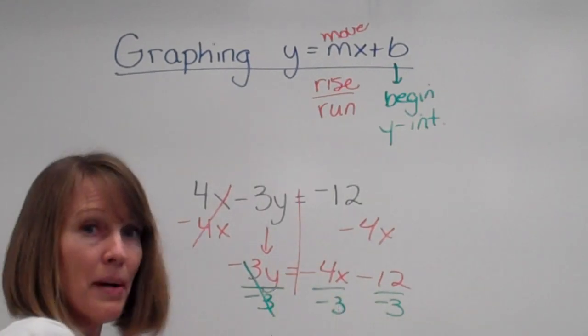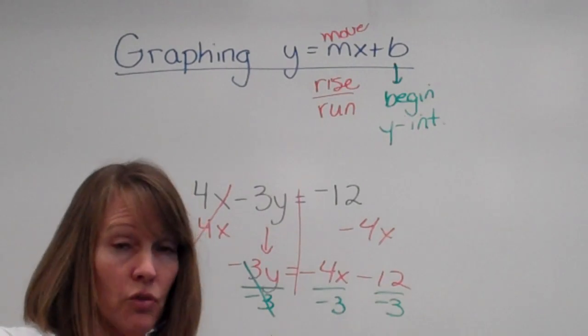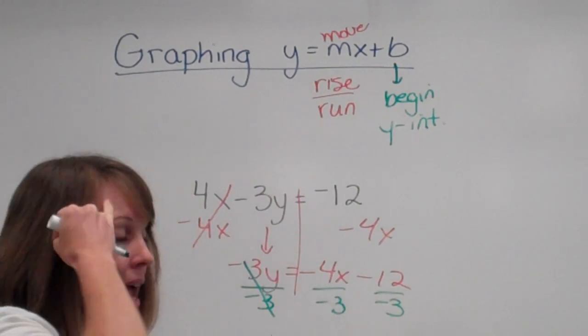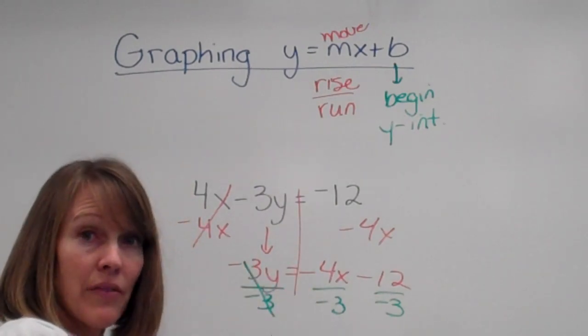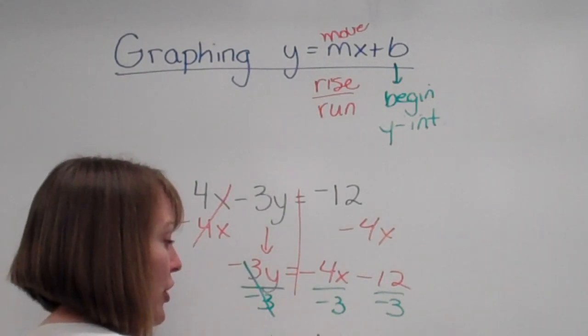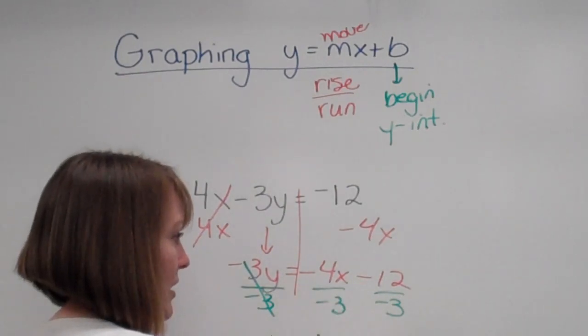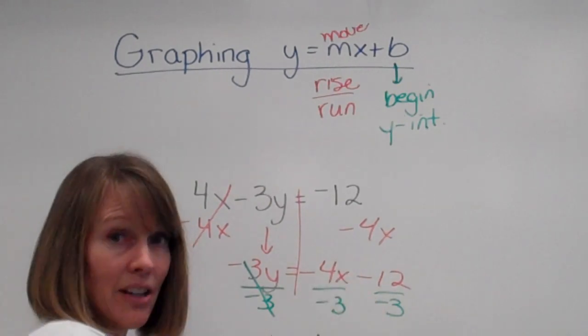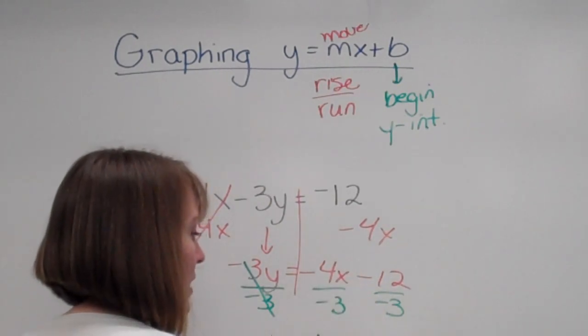Negative 4 divided by negative 3. Okay, first of all, we want a fraction. Remember, we want to rise over run. And a negative divided by a negative would give us a positive. So 4 thirds, that's my slope, x. And a negative divided by a negative, again a positive, so plus 4.